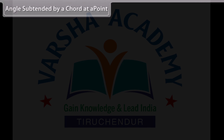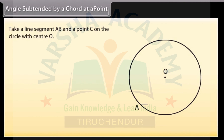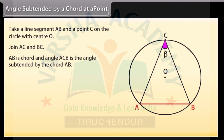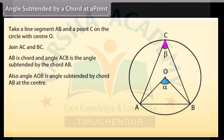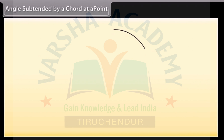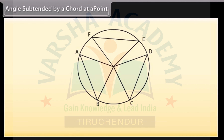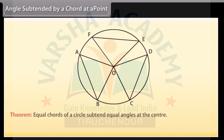Angle subtended by a chord at a point. Take a line segment AB and a point C on the circle with center O. Join AC and BC. Here AB is the chord, and angle ACB is the angle subtended by the chord AB. Also, angle AOB is the angle subtended by chord AB at the center. If we draw two or more equal chords of a circle and measure the angles subtended by them at the center, we will find that the angles subtended by them at the center are equal.